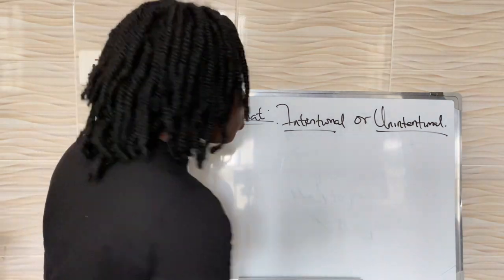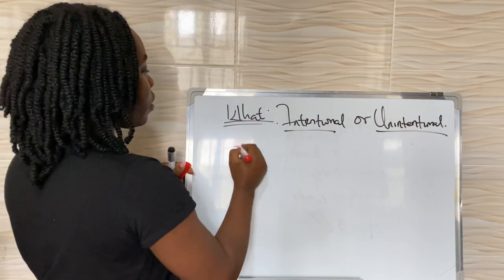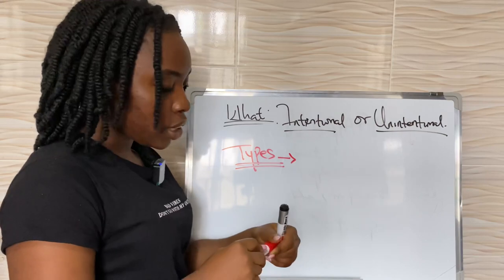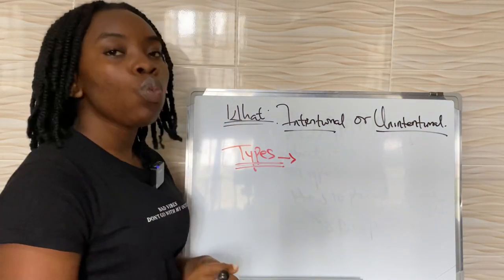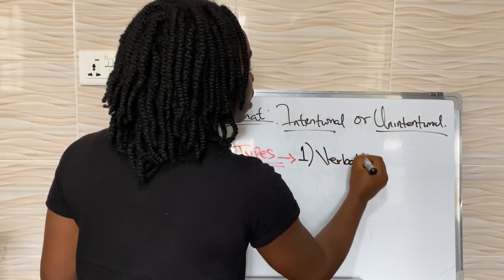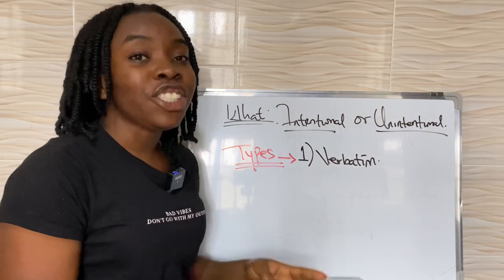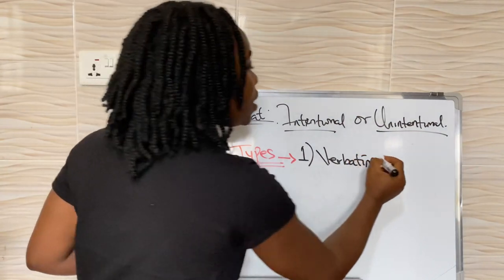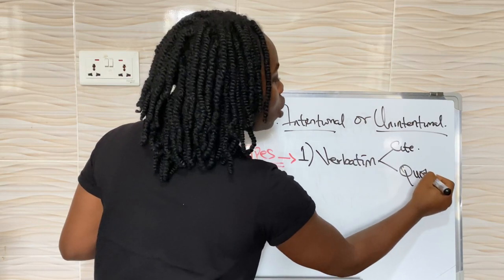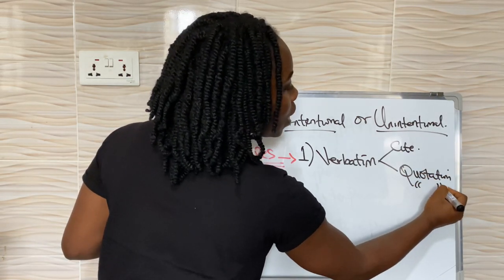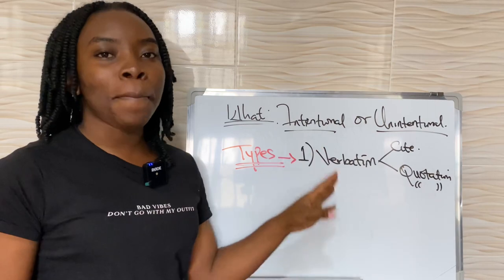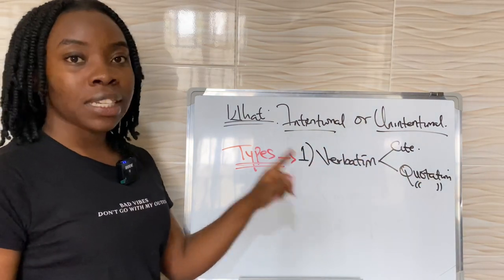Now let's look at the types of plagiarism. There are different types. The very first one is verbatim plagiarism — it means you copy word for word someone else's work or ideas without giving them credit. Maybe someone says something and you literally copy and paste it without citing, and without using quotation marks. That's verbatim plagiarism — literally Control C, Control V, copy and paste.